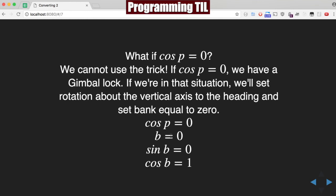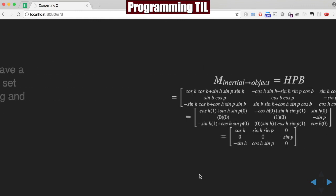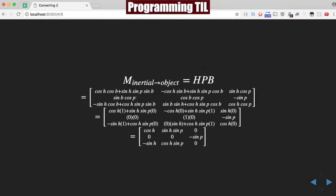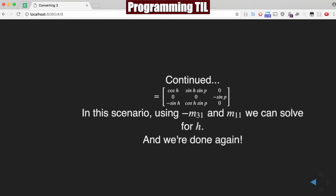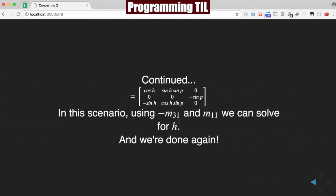We already know cosine P is zero. We're going to set bank to zero, so sine of B is zero and cosine of B is one. And then again, we're going to reassign these values into the original matrix here for H and B. And as we fill that all out, we can solve for H once again, just like we did before, using M11 and M31. And then we're done.